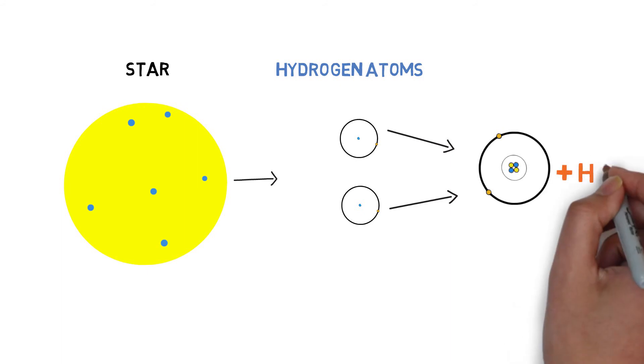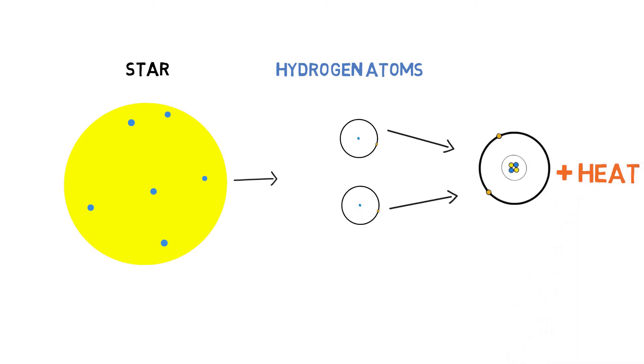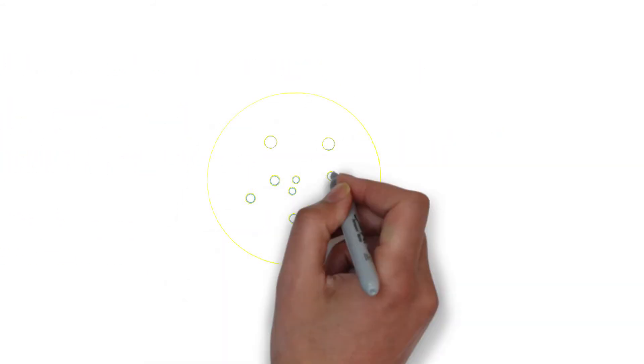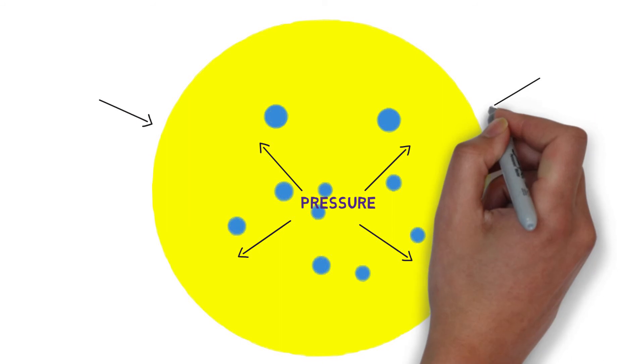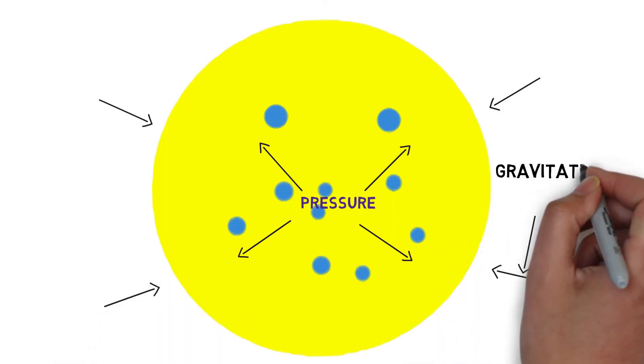The heat released in this reaction is like a controlled hydrogen bomb explosion, and this is what makes the star shine. This heat also increases the pressure of the gas until it's sufficient to balance the gravitational attraction, and the gas stops contracting.